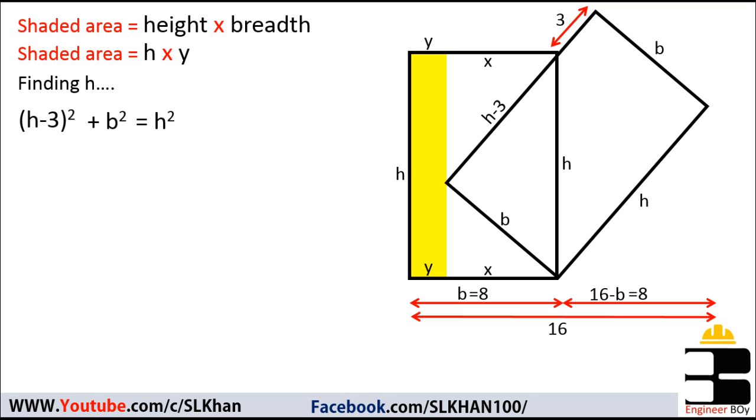Now let's simplify this theorem for the height of the rectangle. (h - 3)² is going to be h² + 3² - 2h(3), or -6h, plus b², which is of course 8² = h², or 9 - 6h + 64 = 0. So h = 73/6. This is now the height of that shaded region.